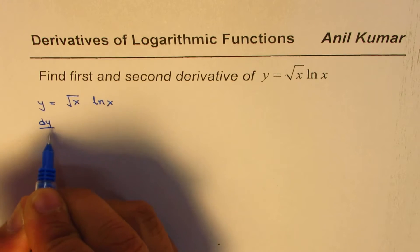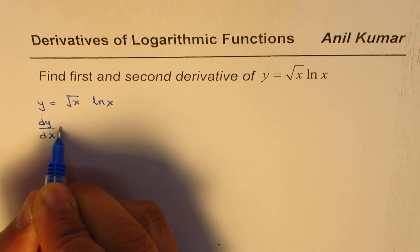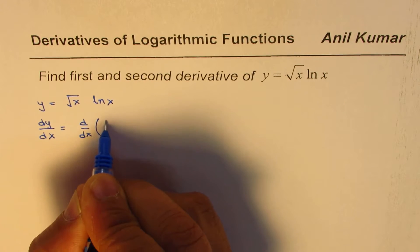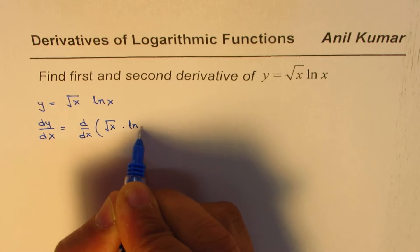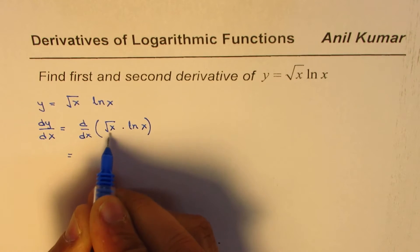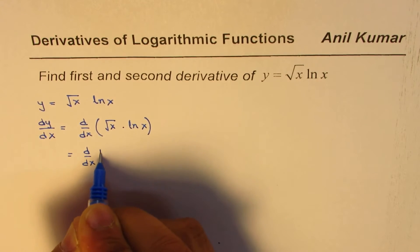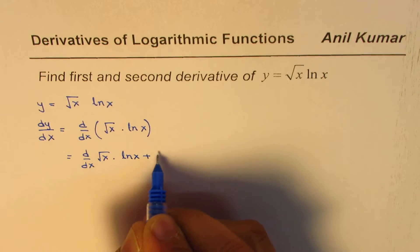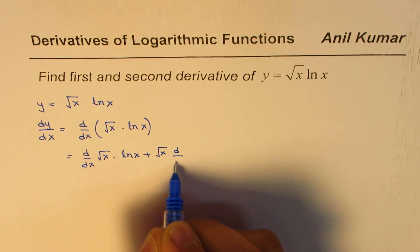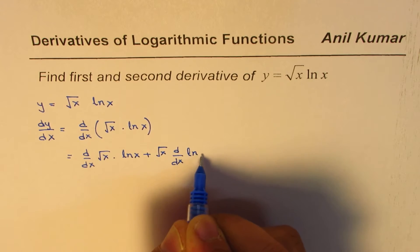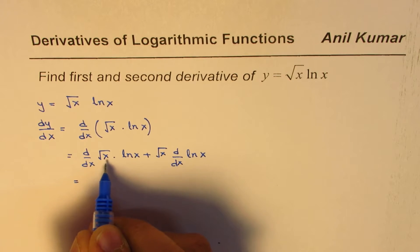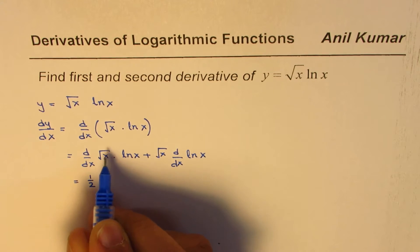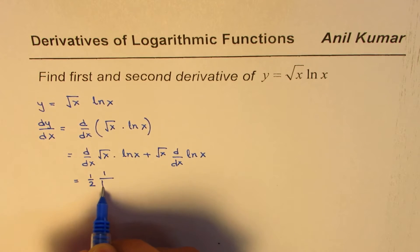So dy/dx, the first derivative, will be found by applying the product rule: d/dx of square root x times ln x. You get the derivative of the first function, d/dx of square root x, times ln x, plus the first function times the derivative of the second function. The derivative of square root x, that is x to the power of half, is half times x to the power of minus half, which can be written as 1 over square root x.